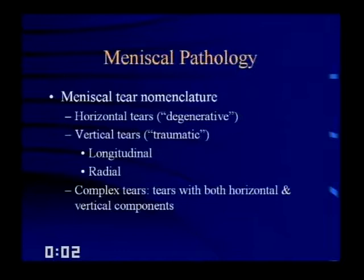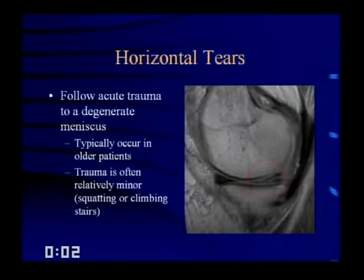Horizontal tears follow acute trauma to a degenerated meniscus. They typically occur in older patients, and the trauma is often relatively minor — for example, after squatting or climbing stairs. Here's a nice example of a horizontal tear that parallels the femoral articular surface but extends to the tibial articular surface.